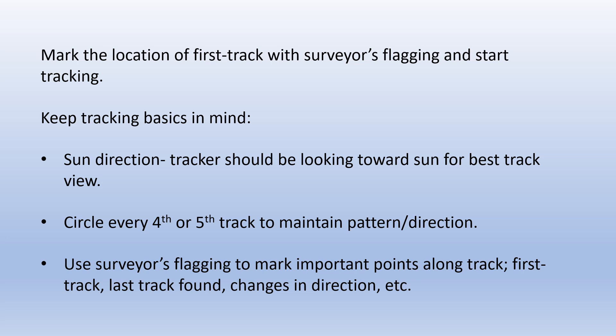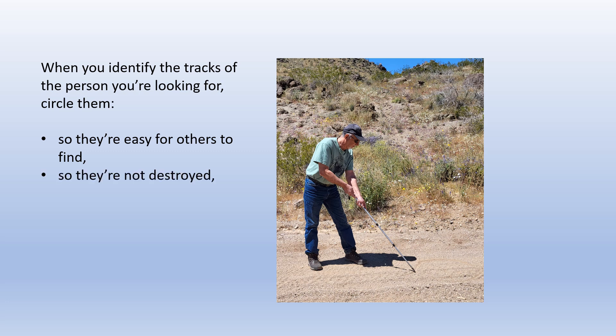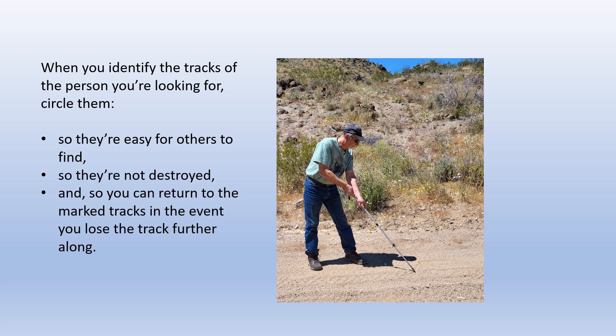Use surveyor's flagging to mark important points along the track: the first track, the last track found, changes in direction, etc. When you identify the tracks of the person you're looking for, circle them so they're easy for others to find, so they're not destroyed, and so you can return to the marked tracks in the event you lose the trail further along.